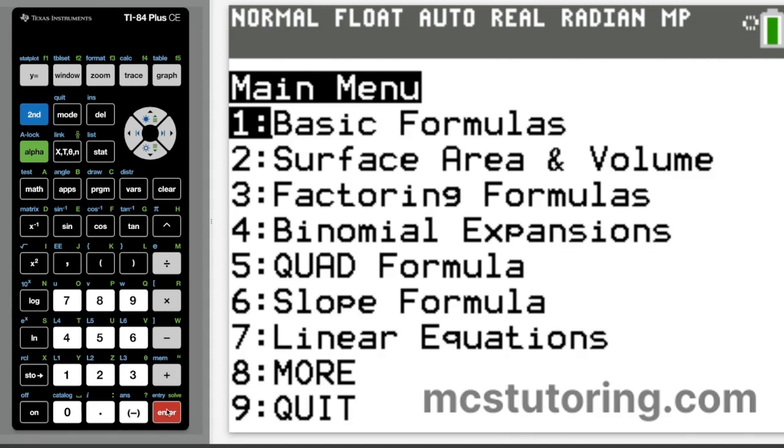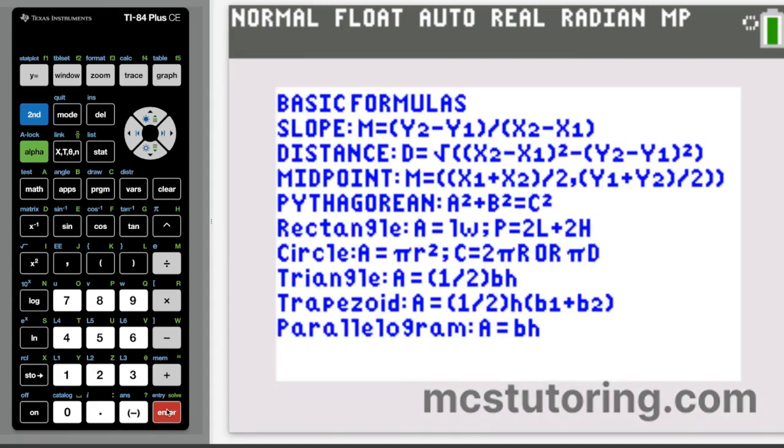So let's go through these in a little bit of detail. So we have the basic formulas. We've got slope is y2 minus y1 over x2 minus x1. There's actually a more detailed explanation of this later on in one of the menus. Then we have the distance formula, the square root of x2 minus x1 squared minus y2 minus y1 squared. And then we've got the midpoint formula, the x1 plus x2 over 2, y1 plus y2 over 2. The Pythagorean theorem, a squared plus b squared equals c squared.